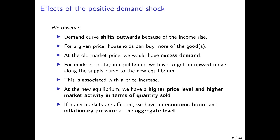What happens if many markets are affected — which is typically the case if the government boosts the incomes of all people in the economy? Some will buy more cinema tickets after lockdown, some will go to restaurants, some will buy furniture or whatever. So if many different markets are affected, we have an economic boom and inflationary pressure, because prices in all these markets face upward pressures. At the aggregate level, this could manifest itself as an economic boom with a higher inflation rate.